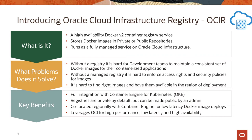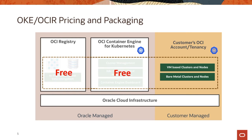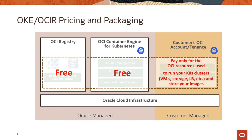So you get high performance, low latency, and highly available access to those images running in the same region. From a pricing perspective, it's a very basic and simple pricing structure. All of the managed services are completely free, and you're only paying for the OCI resources you're using underneath. For instance, that would be virtual machines hosting your containers or pods, any storage services for persistent data, or object storage used to store your images in OCIR.